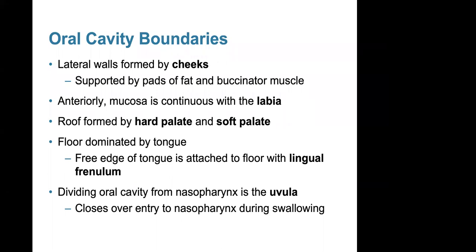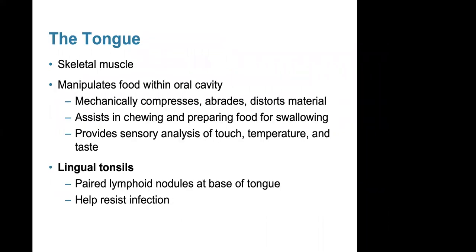The uvula divides the oral cavity from the nasopharynx and closes over the entry to the nasopharynx during swallowing. The tongue is skeletal muscle that manipulates food within the oral cavity — it mechanically compresses, abrades, and distorts material, assists in chewing and preparing food for swallowing, and provides sensory analysis of touch, temperature, and taste. The lingual tonsils are paired lymphoid nodules at the base of the tongue that help resist infection.